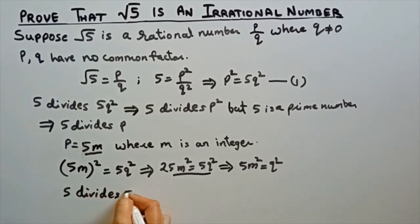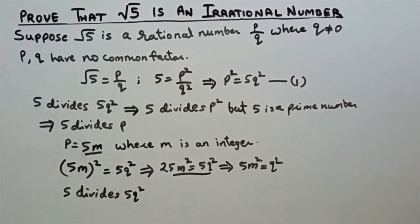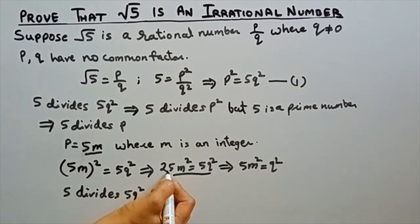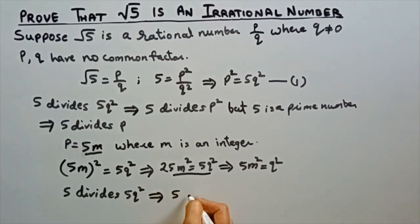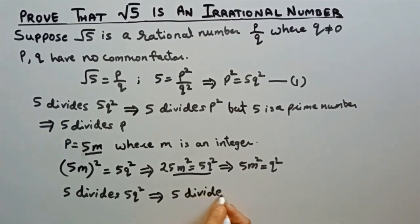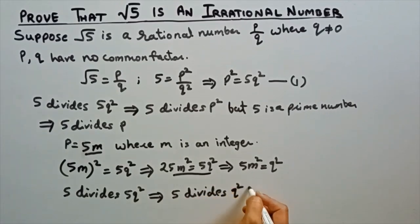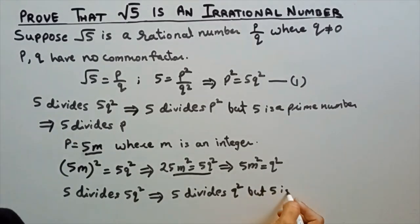From 5m squared equals q squared, we can say that 5 divides q squared — since 5 is a common term. This implies 5 divides q squared. But 5 is a prime number.